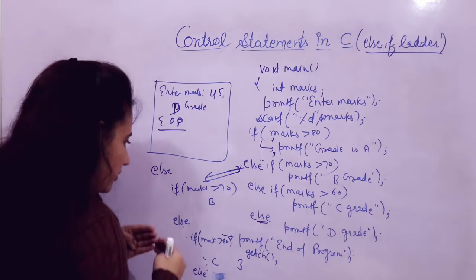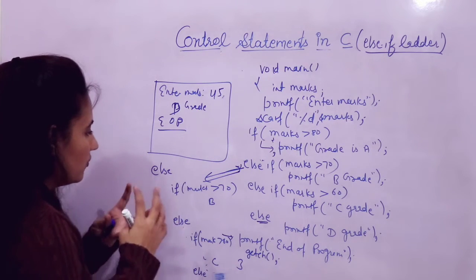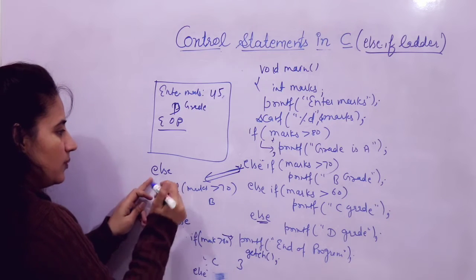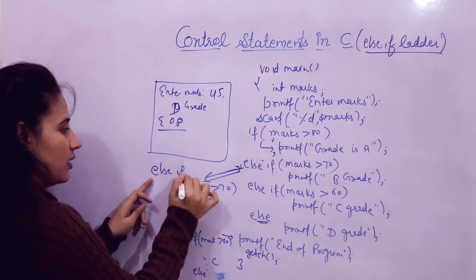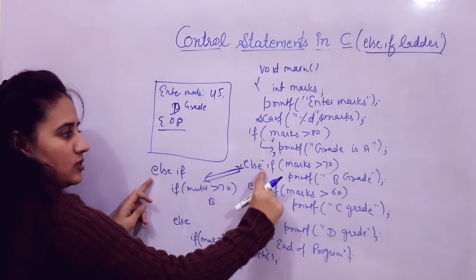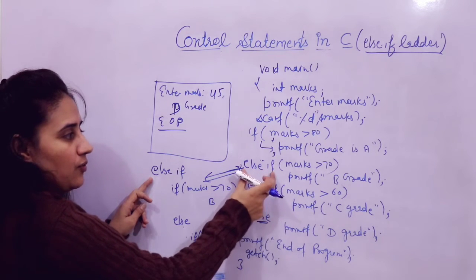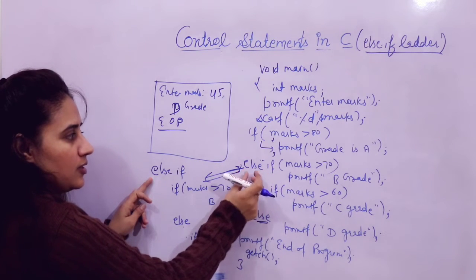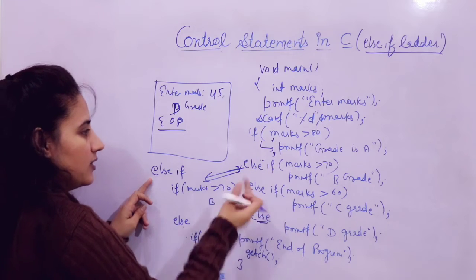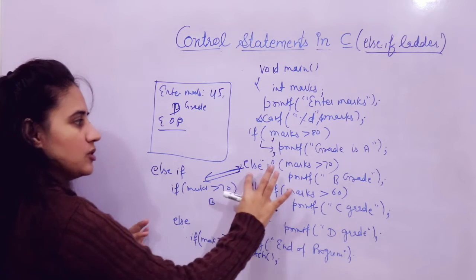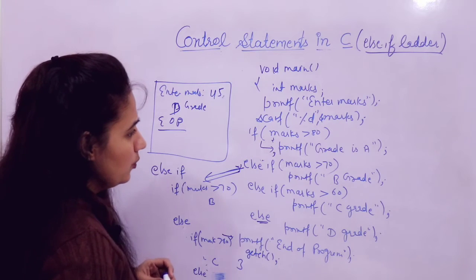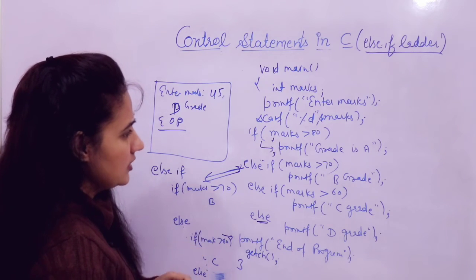So I'm not putting any curly braces and simply writing it like this. Now I hope you got the working of this else-if statement. The one question or assignment for you is: you have to make a program where you enter a character — it could be A to Z small letter, capital letters, zero to nine numbers, or any special character. You have to take input from the user and tell whether the entered character is uppercase, lowercase letter, a number, or a special character.